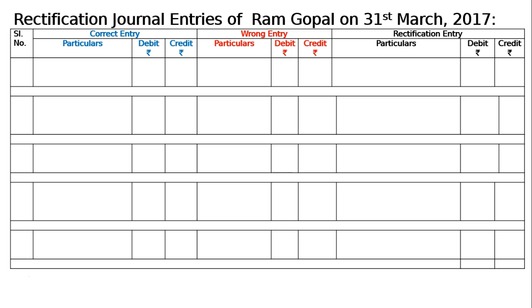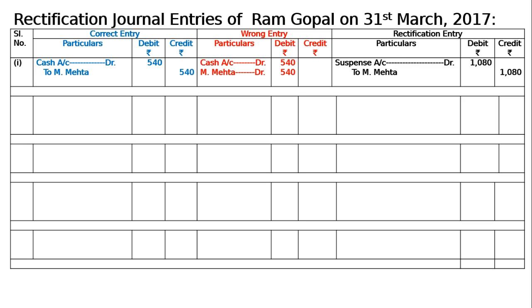The first one: Rs. 540 received from R Mehta was posted to the debit side of his account. The correct entry is cash account debited to R Mehta. But by mistake it was wrongly debited — R Mehta debited, cash debited — so R Mehta was debited by mistake. It will be rectified by crediting R Mehta by double the amount. Hence, suspense account debited to R Mehta — the double amount — Rs. 1040.